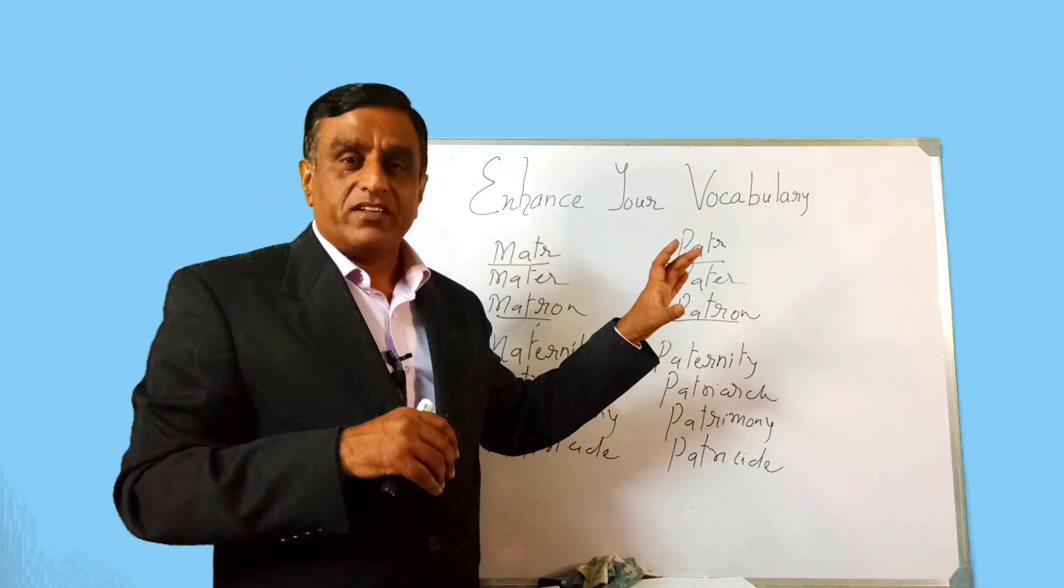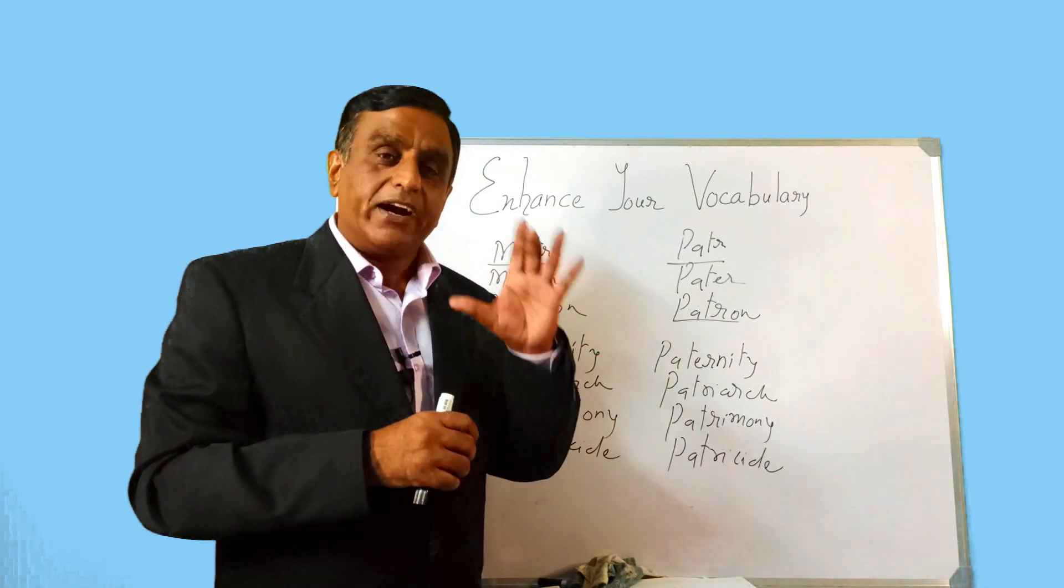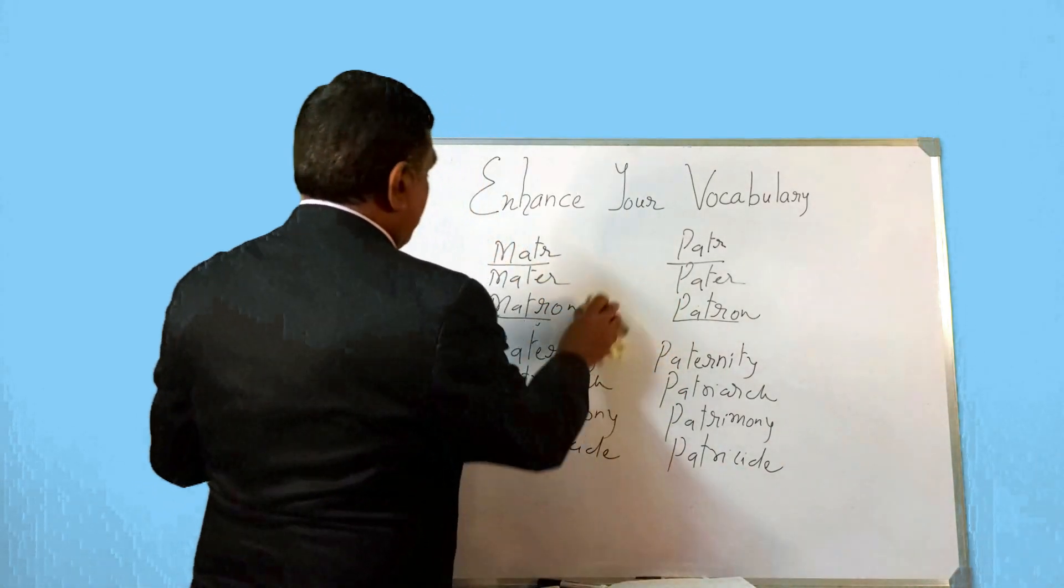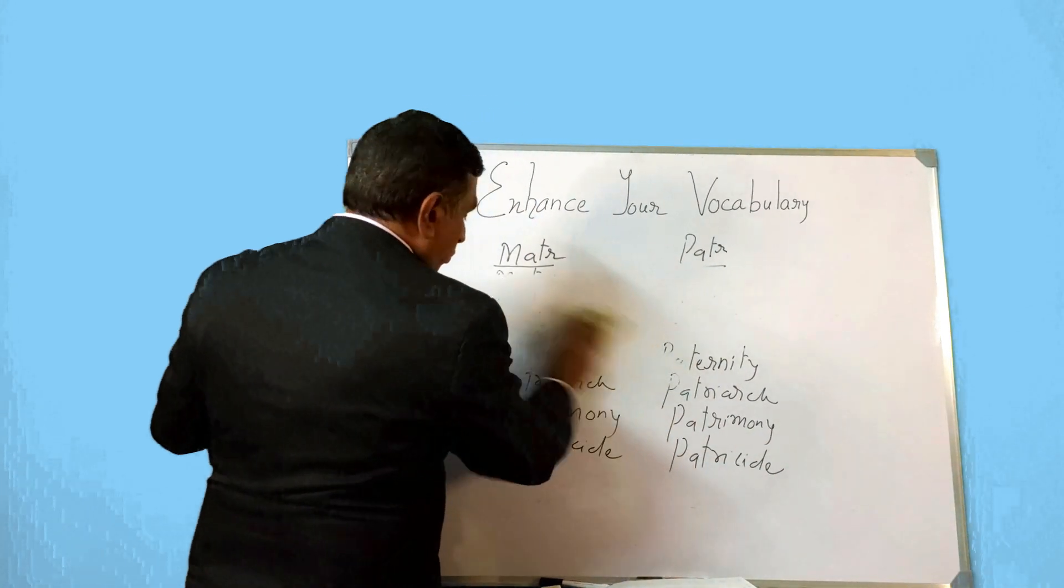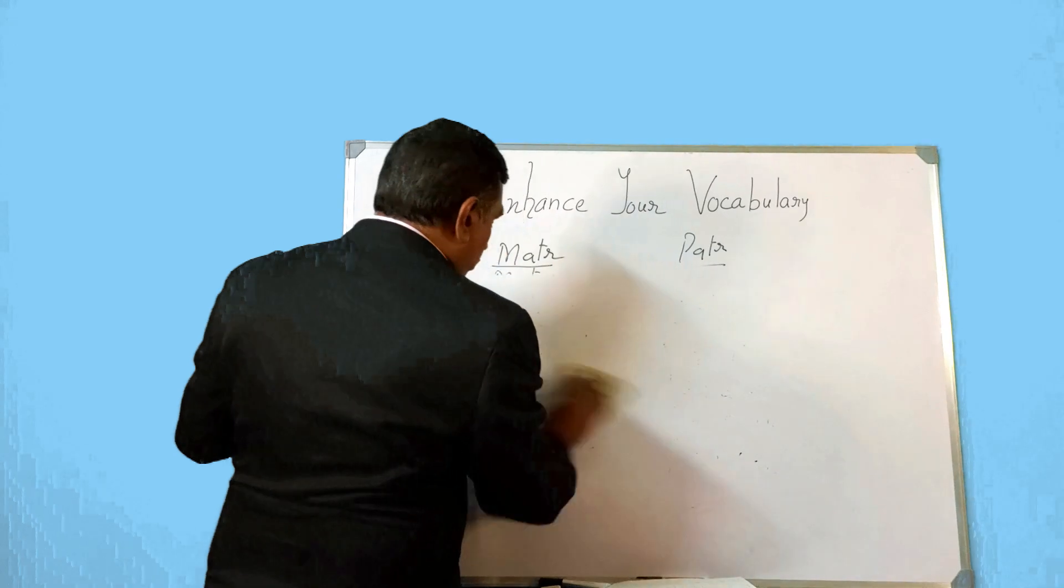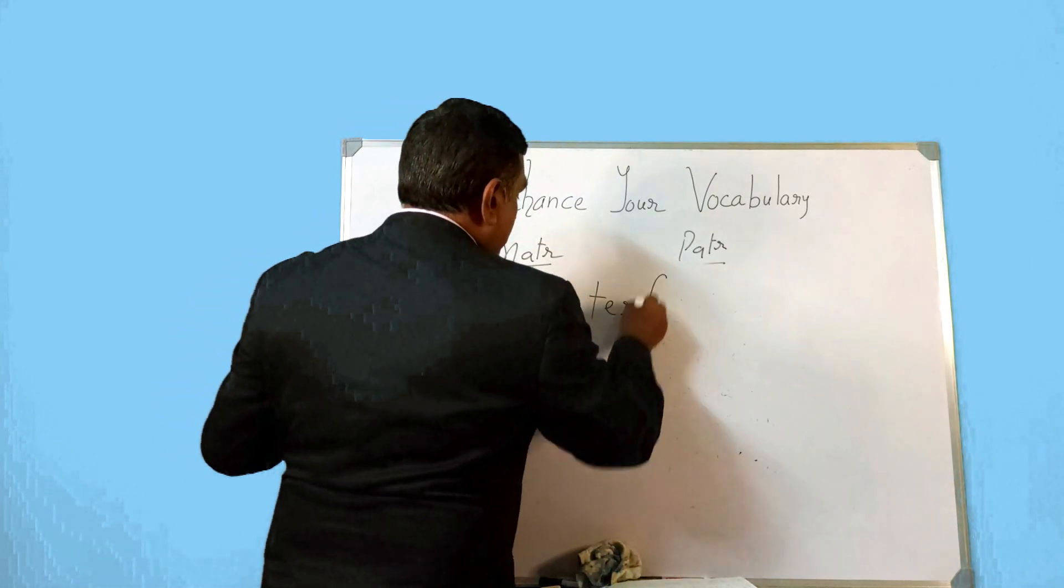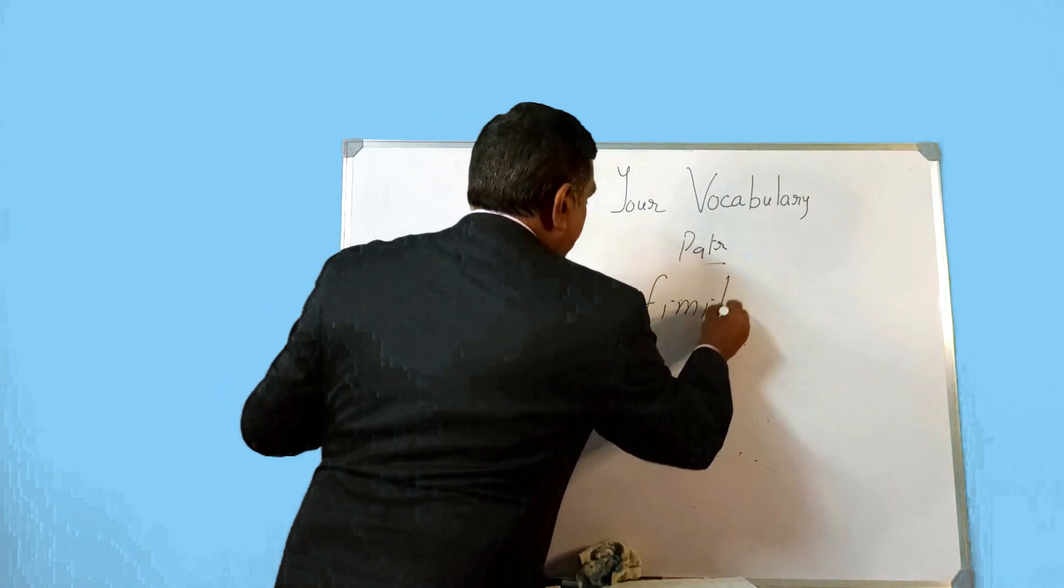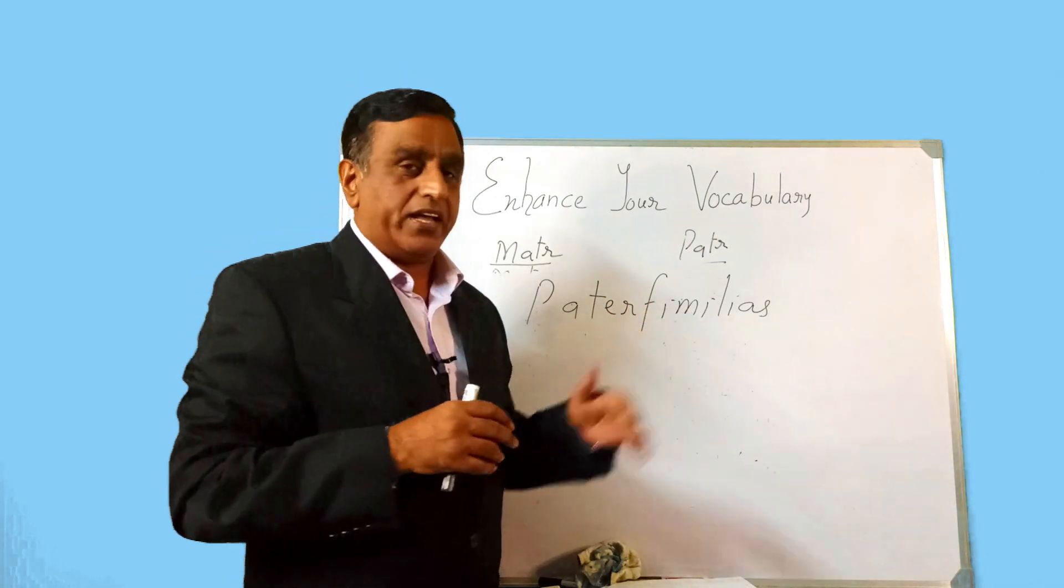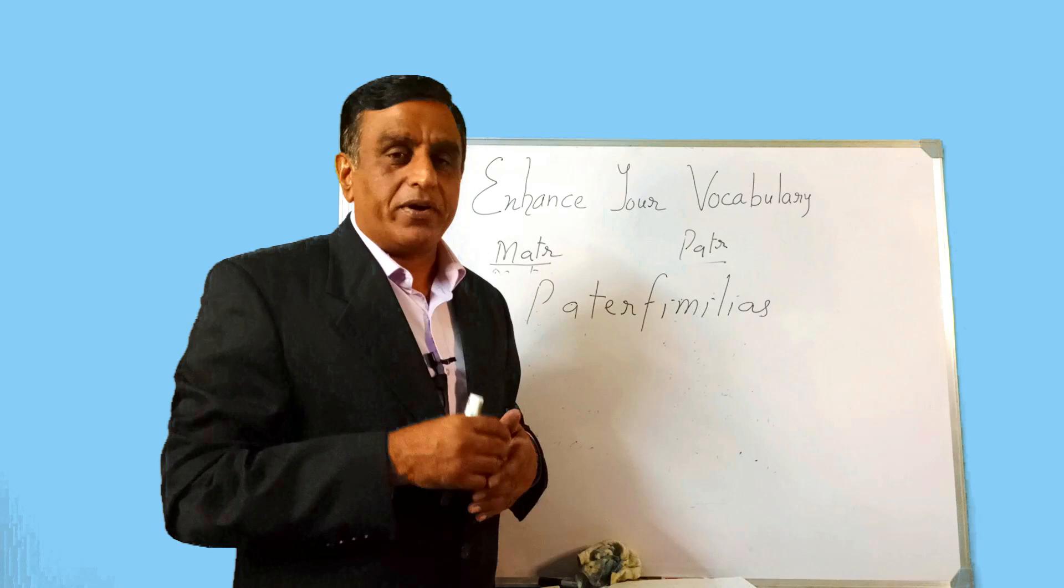So today we have studied about certain words like this. Matra and patra is father and mother. So when we say a patriarchal family, straight away we should understand that the head of the family is a male. Similarly when you say matriarchal family the head of the family is a female. Now before we wind up for this session, I would like you to focus on a word which I am going to give you here and find out what could be the meaning of that particular word. Let us say here you have a word like P-A-T-E-R-F-I-M-I-L-I-A-S, paterfamilias. Now don't confuse with the word patra and family. Find out what could be the meaning of paterfamilias and I am sure you will enrich your memory by one more word.